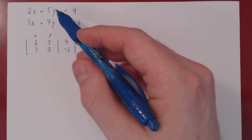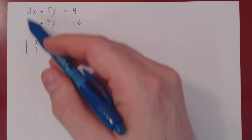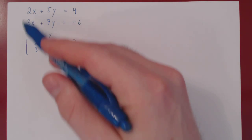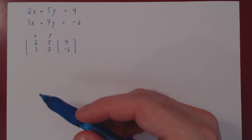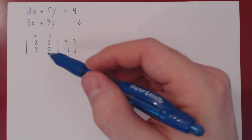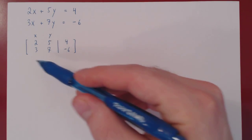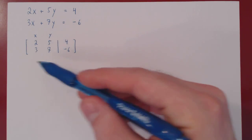In this video we will solve a linear system using a combination of Gaussian elimination and backward substitution. As always, we start with the augmented matrix of the linear system.